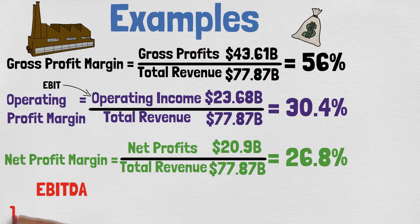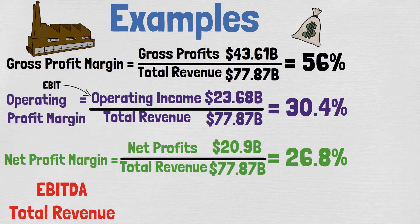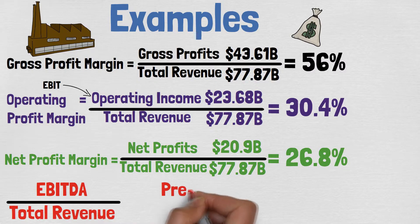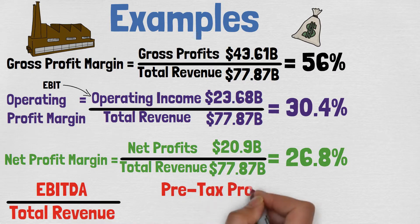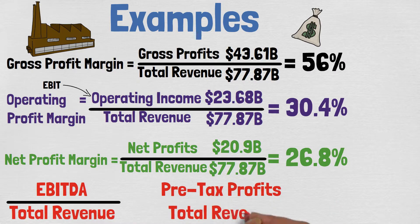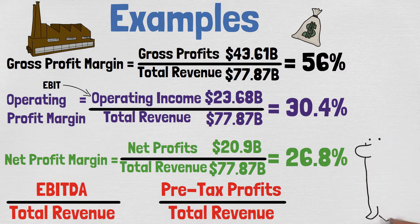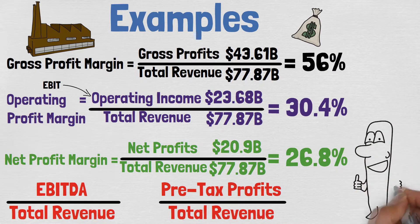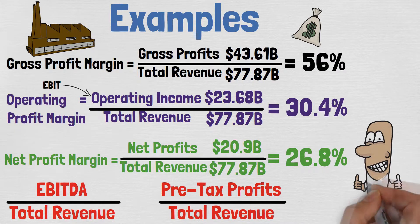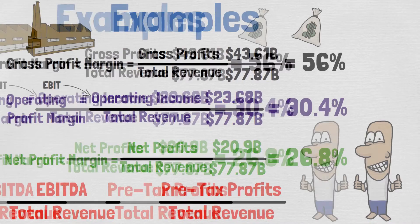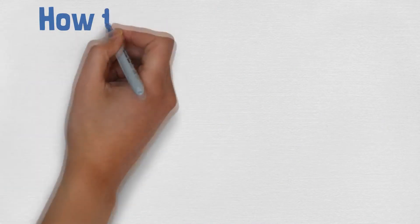These three are the most commonly used profit margins, but you can also calculate the EBITDA margin — Earnings Before Interest, Taxes, Depreciation and Amortization — or the pre-tax profit margin. They are calculated the same way as the previous three: either divide EBITDA by the revenue, or divide the pre-tax profits by the revenue.